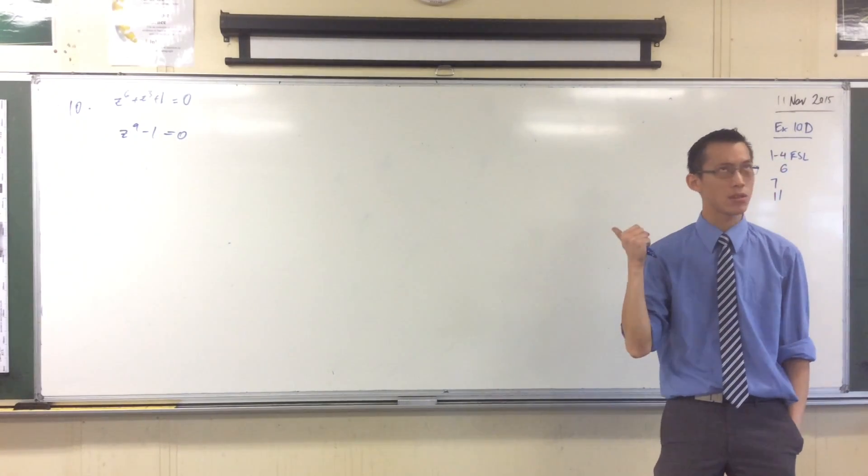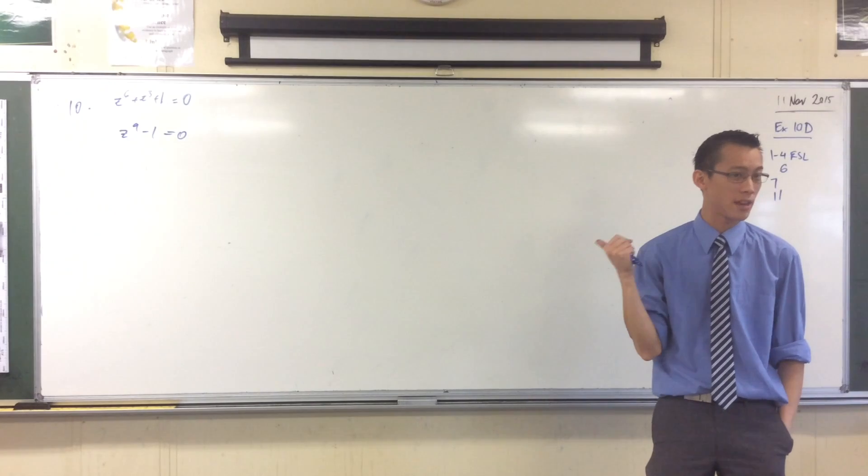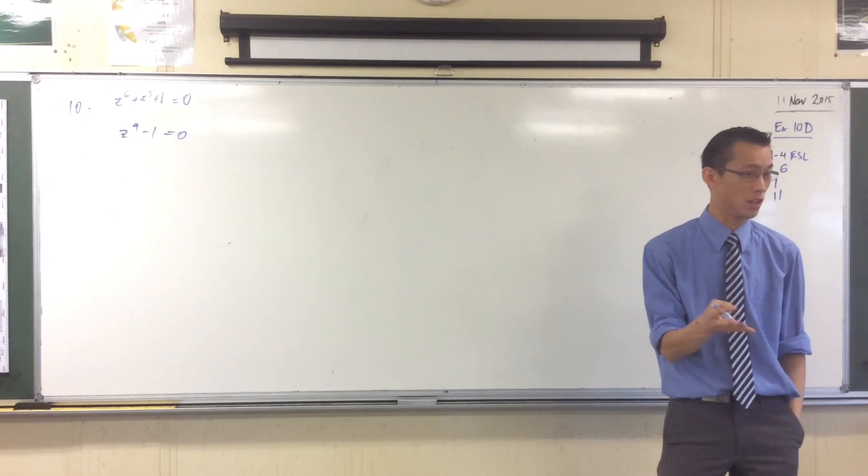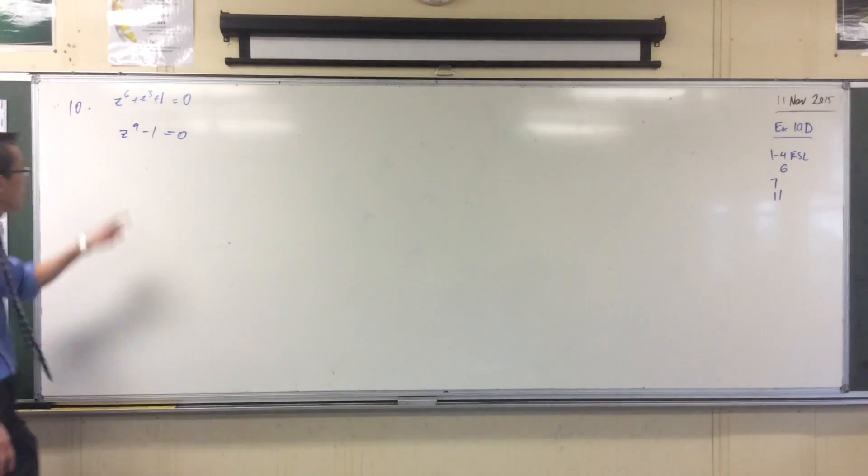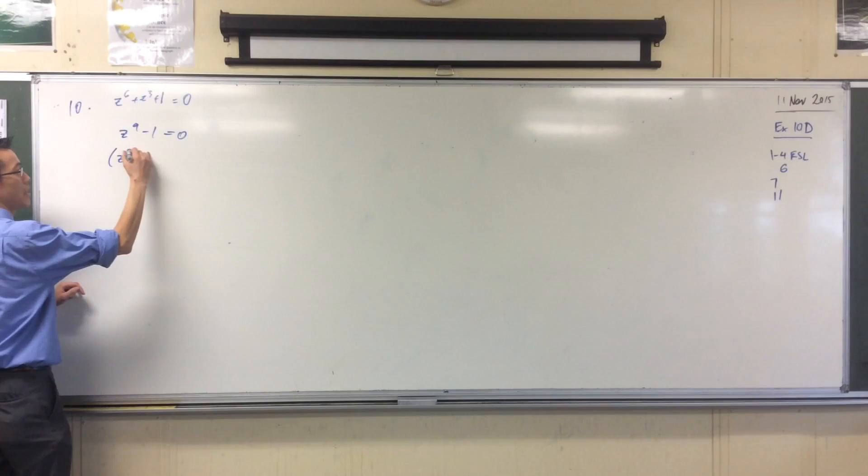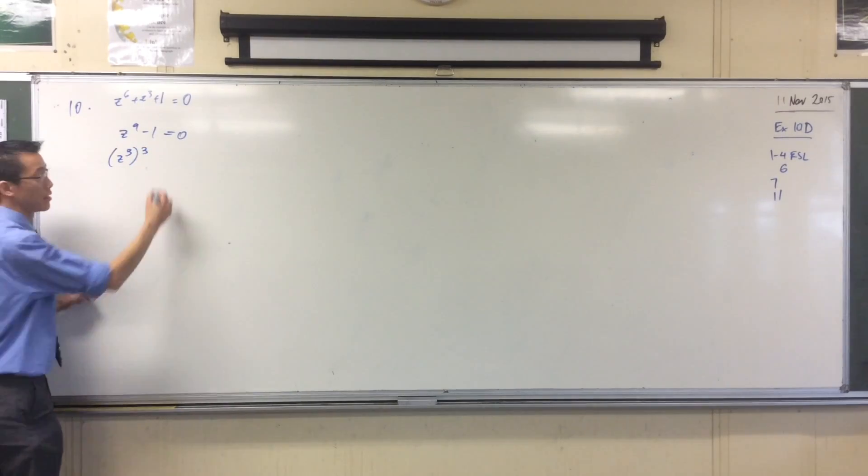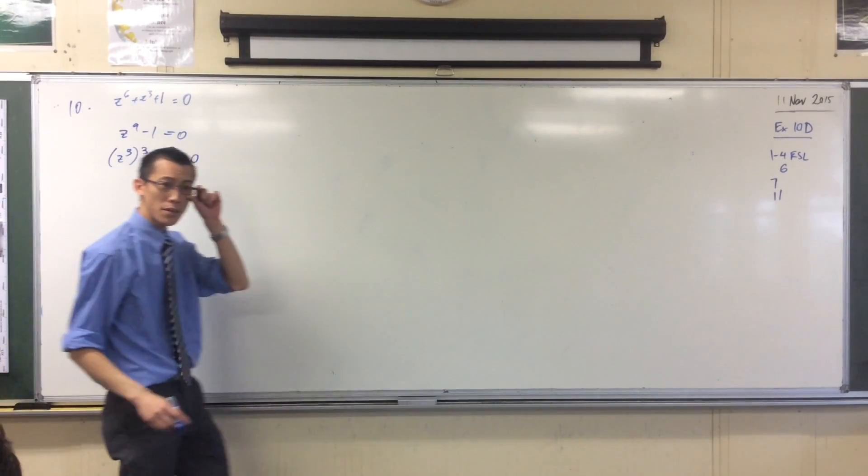But that cube, sorry, the 9th roots, that equation that I've got, the polynomial that gives me the 9th roots of unity, is actually a difference of cubes. Not super obvious, but if I write it out in such a way, because 9 is a multiple of 3, I can write this as (z^3)^3 - 1^3. There's my difference of cubes.